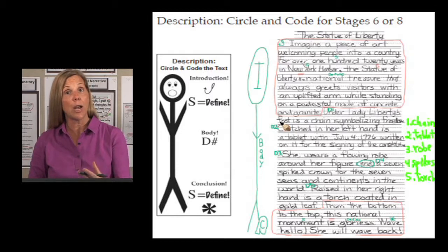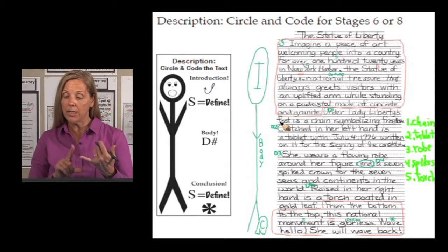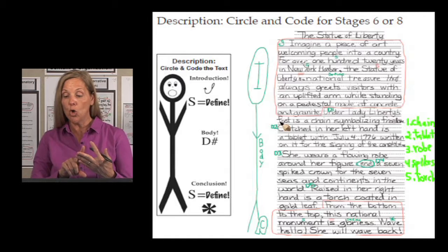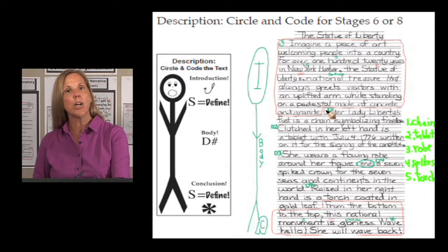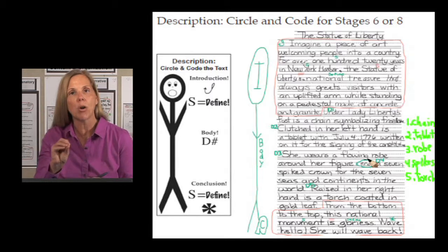And the parts that we described for the Statue of Liberty was her chain, the tablet, her robe, the spikes on her crown, as well as the torch in her hand. So we went through and we went detail one, detail two, we labeled each detail by finding the part.